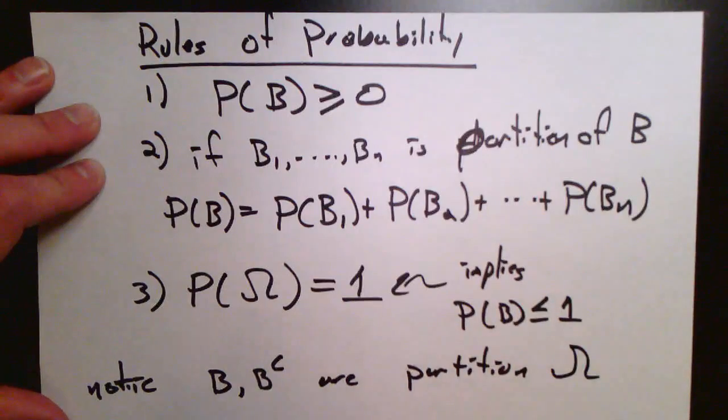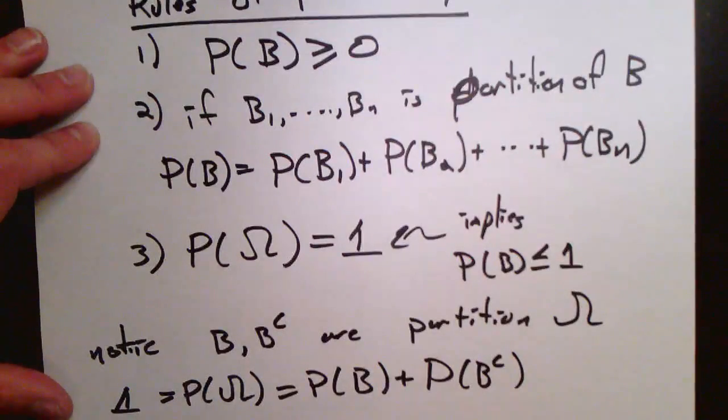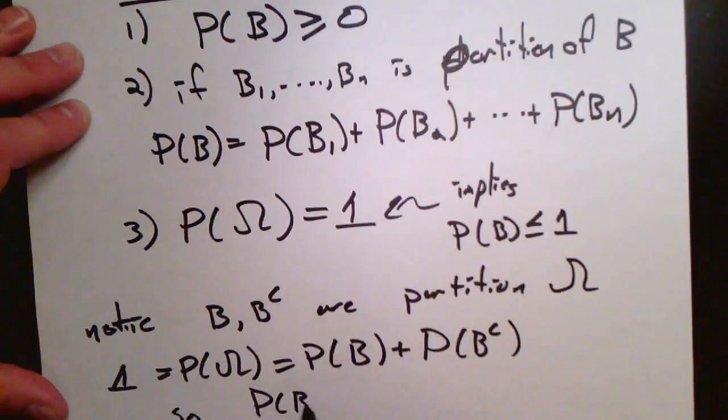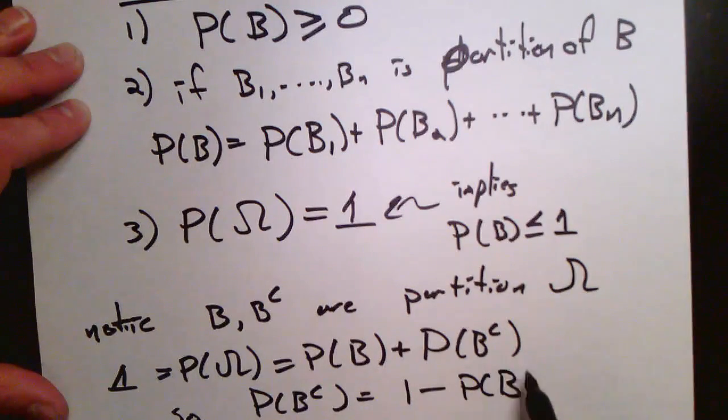So here's a simple consequence. Notice that b and b complement, well, b complement here is everything in omega which is not in b, so the complementary set. Notice that they're a partition of the set omega.